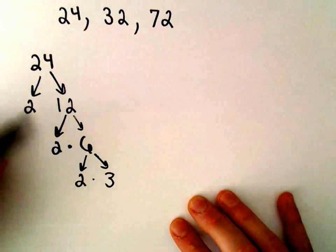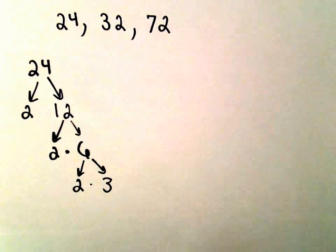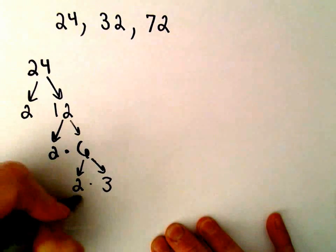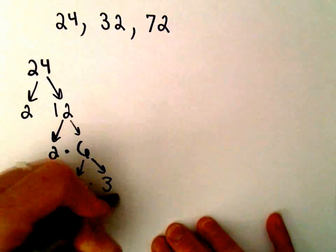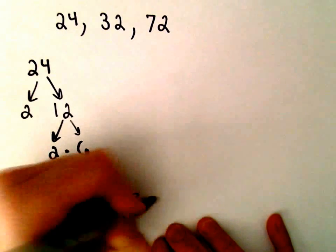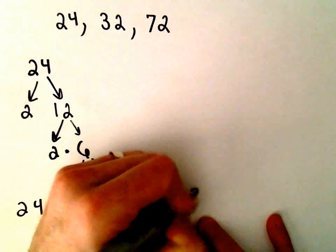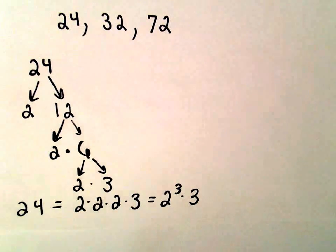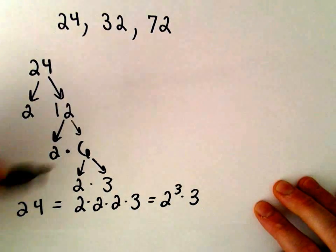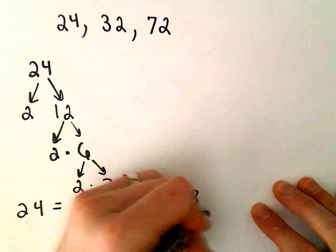Now all of these are prime numbers. So we can write 24 as 2 times 2 times 2 times 3, or we can write it as 2 to the third times 3. So box that in.